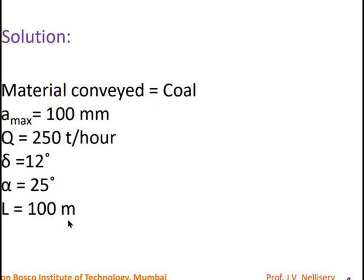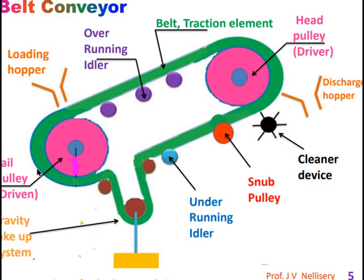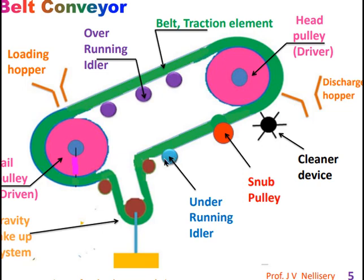The belt conveyor consists of different parts: the tail pulley (driven pulley) and the head pulley (driver pulley, shown in pink). The shaft is shown in blue. The belt — also called the traction element — is shown in green. The overrunning idler in purple supports the belt on the top run, and the underrunning idler in sky blue supports the belt from beneath. The loading hopper in orange is where material is placed onto the belt.